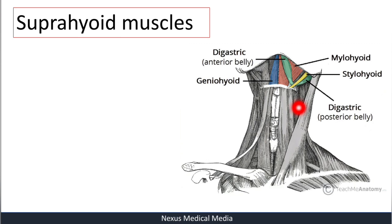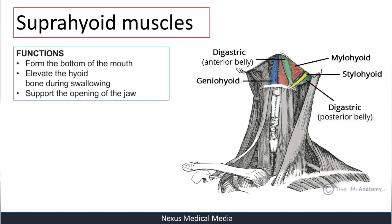Let's start with the suprahyoid muscles. These muscles include the digastric muscle — shown here in green with an anterior belly and posterior belly — the stylohyoid muscle shown here in yellow, the mylohyoid muscle, and the geniohyoid muscle. The functions of the suprahyoid muscles are: they form the floor of the oral cavity, they elevate the hyoid bone during swallowing or deglutition.